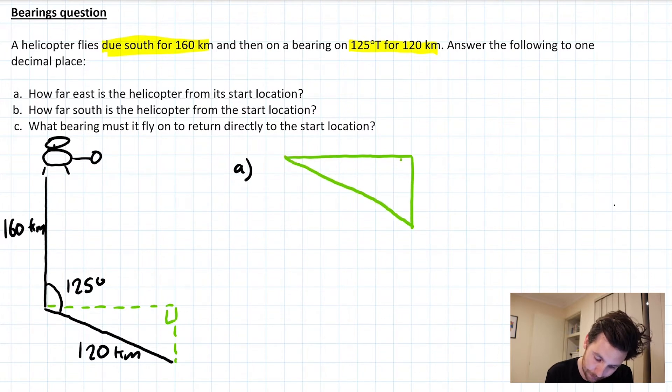There we go, not too bad. Okay, I know that my hypotenuse length is 120. Now we need this angle here as well. I'll just highlight that in yellow quickly.